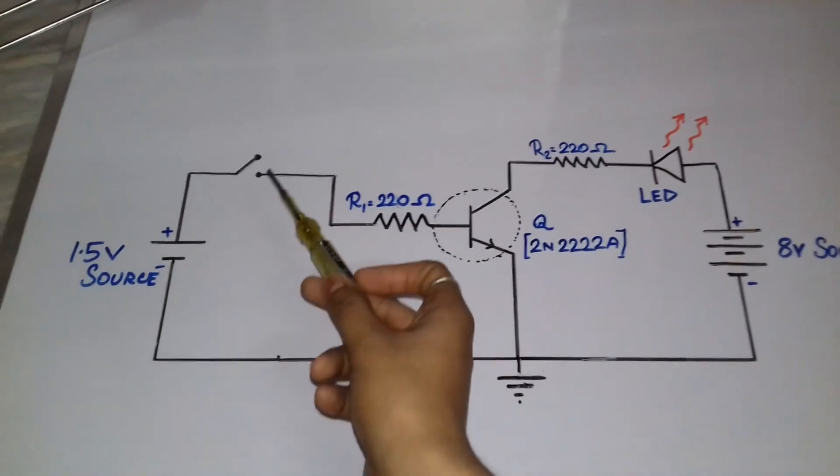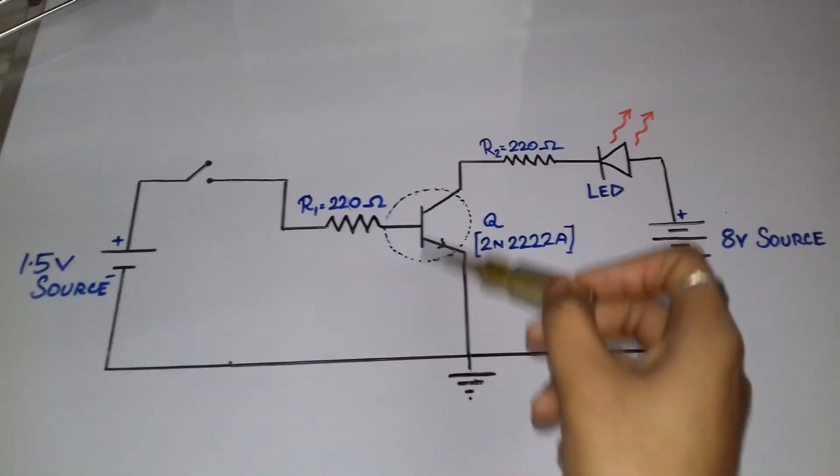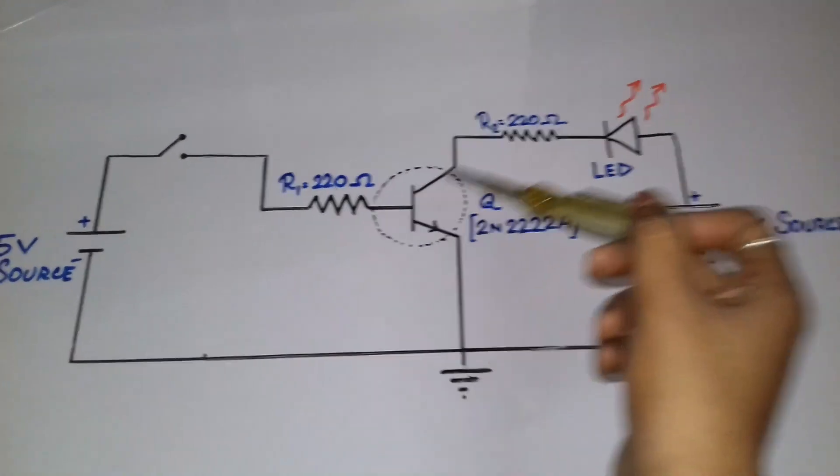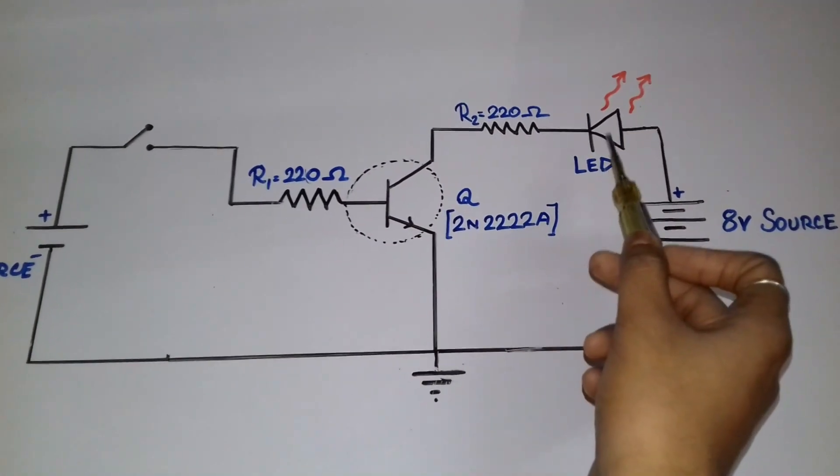So this switch will control the transistor from the saturation mode to the cutoff region. And in the cutoff region the LED will be off, and in the saturation region the LED will be on. So let's go to the practical.